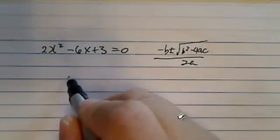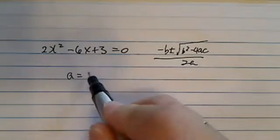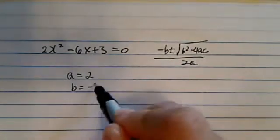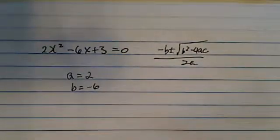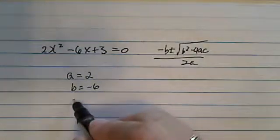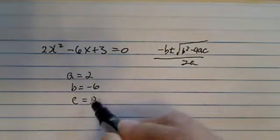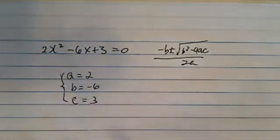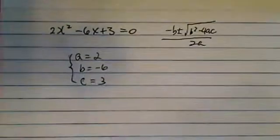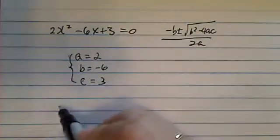I always tell my students, before you start, just take one second and take all the coefficients down. It's so much easier because under time pressure or test pressure, if you substitute the wrong number, you lose all the points anyway. So slow down.